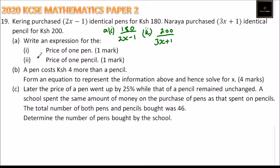Now Part B: a pen costs 4 shillings more than a pencil. Form an equation to represent this information and solve for x. The cost of pen is 180 divided by 2x minus 1. If you subtract the cost of one pencil, which is 200 divided by 3x plus 1, that difference should be 4.